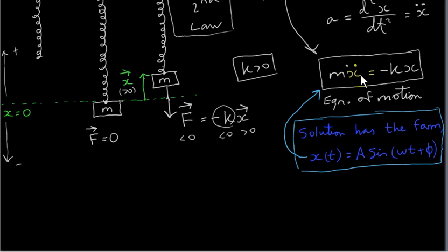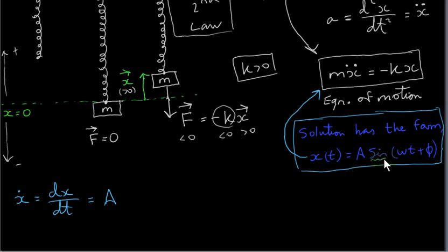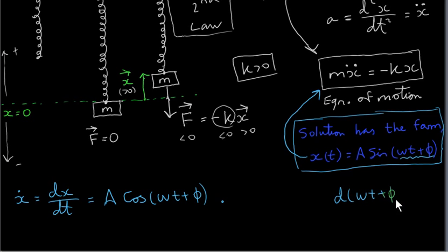To do that, we need the second derivative of x with respect to time — x double-dot. We start by getting x dot, which is dx/dt. We differentiate the sine function: the constant A stays out in front, the derivative of sine is cosine, and by the chain rule we copy down the angle and multiply by the derivative of the angle. Differentiating omega t plus phi with respect to t gives omega, because phi is a constant so its derivative is zero. So x dot equals A omega cosine of (ωt plus φ).